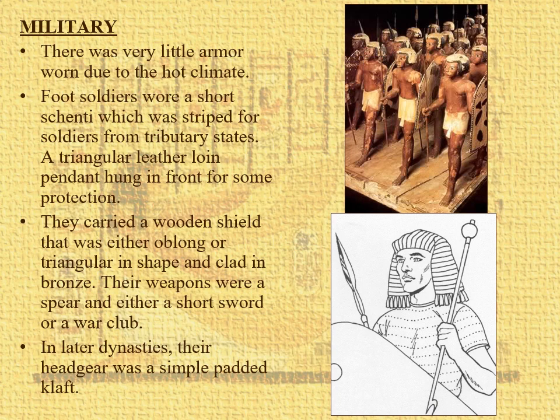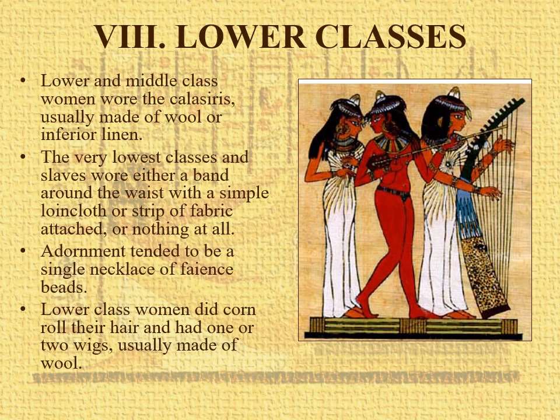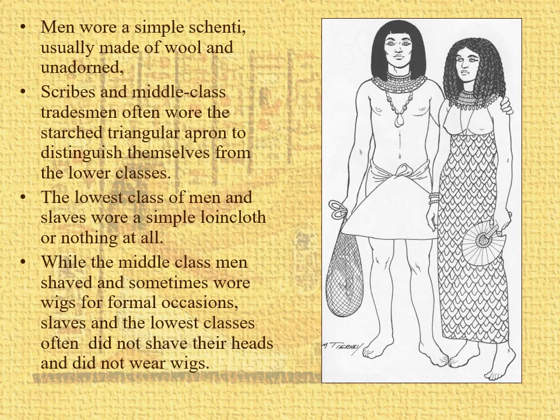Military: there's not much armor — it's hot. So they wore mainly a short shinti, like these soldiers here in this funerary display, a little bit of claft, and then usually a triangular shield and a spear or a little war club. There's not really a lot of armor going on. The lower classes wore very little. Here we see some musicians with the perfume beeswax — she's wearing just a little thong. They have very sheer pleated calisiris and wigs made of wool, or they would cornrow their hair. And then a lower-class woman in a calisiris and a man in a shinti with a pendant — looks like a fisherman and maybe his wife.